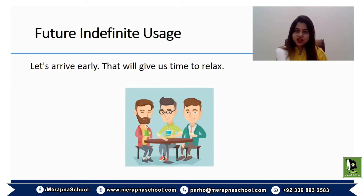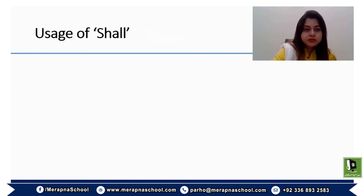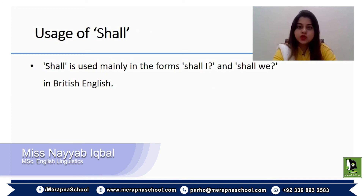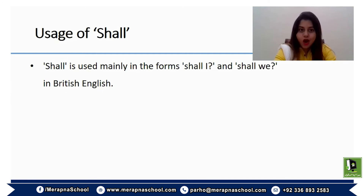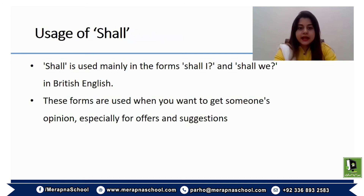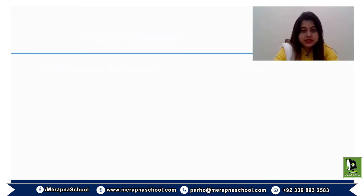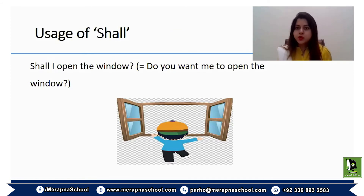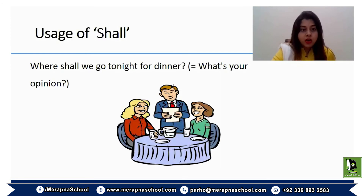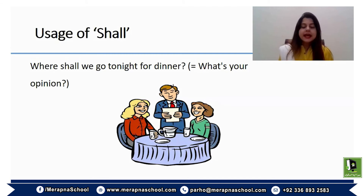'Shall' is also very commonly used in future tense. 'Shall' is mainly used in the forms 'shall I' or 'shall we' — a more polite form used when you want to get someone's opinion, especially for offers and suggestions. For example, 'Shall I open the window?' — you're seeking the other person's opinion on whether they want you to do it. Or 'Where shall we go tonight for dinner?' — asking for a suggestion.